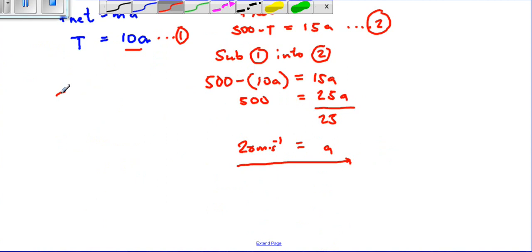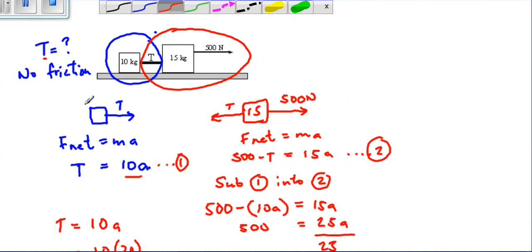As I told you, we had to calculate T. Now we can substitute A in either equation 1 or equation 2. But equation 1 looks easier. We know that T equals 10A, so we can say 10 times our acceleration of 20, which gives you 200 newtons. So this is a simple sum relating to Newton's second law, where we have a 500 newton force pulling both objects.